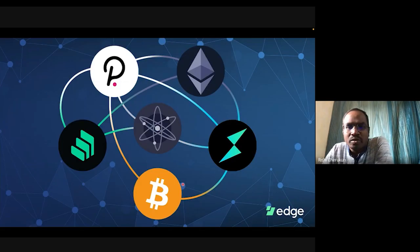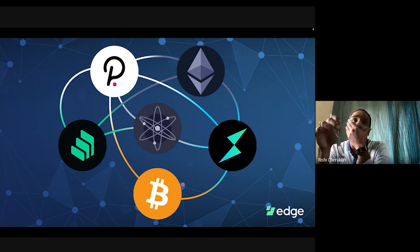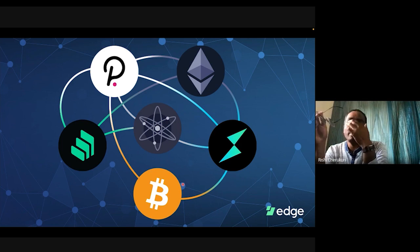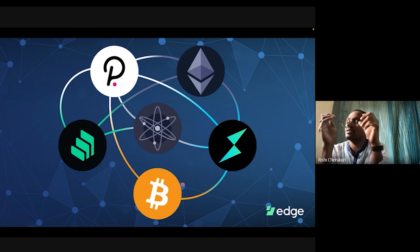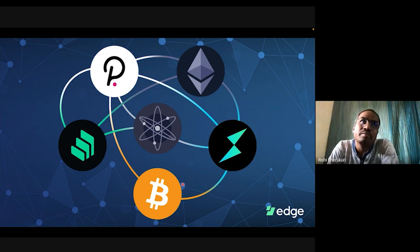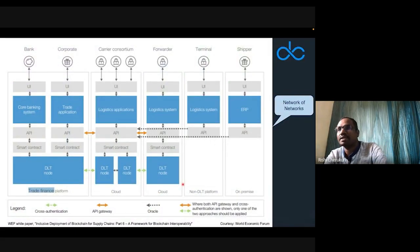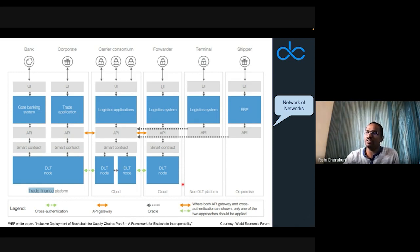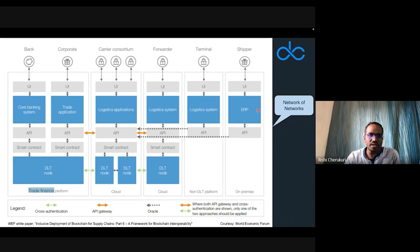There are lots of blockchains today: Polkadot solves one problem, Ethereum another, Cosmos another, and Bitcoin provides the funds. Let's take trade finance as a use case. Trade finance involves a bank, corporations, a consortium of shipping companies, a forwarding company, a terminal, and a shipper — all working together.